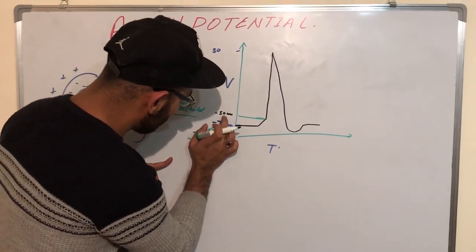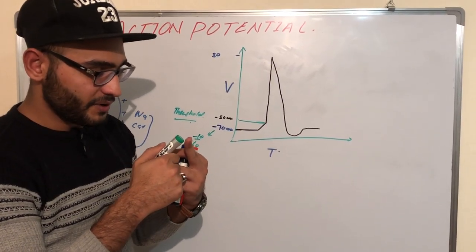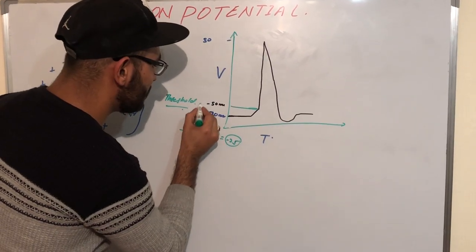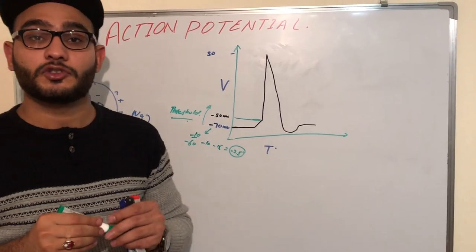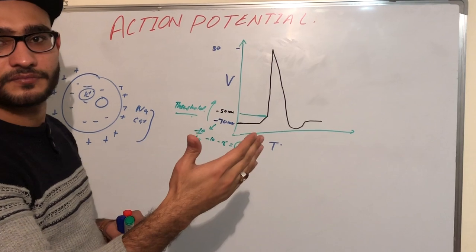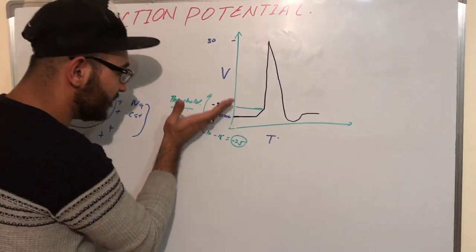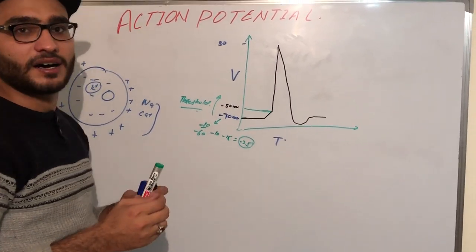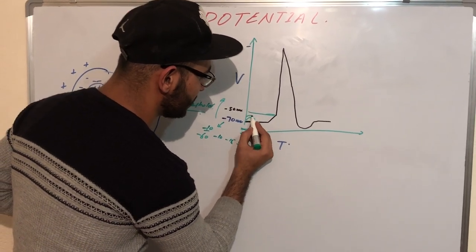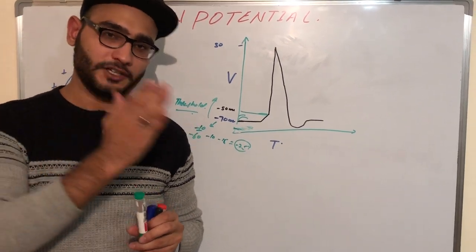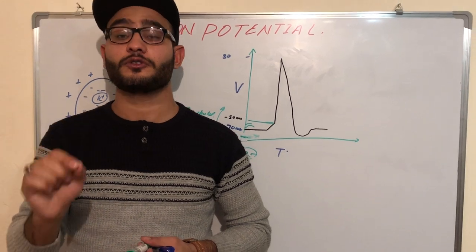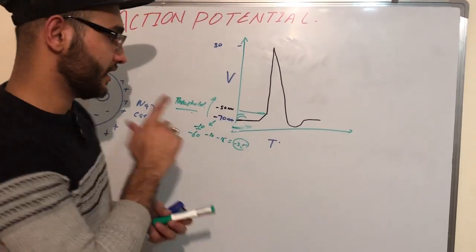It is a necessity for the production of the action potential that the cell membrane should go to the threshold membrane potential. From the threshold membrane potential, if one stimulus has a membrane potential of 10 and another has 50, we can sum them up, and if it is more than minus 50 and crosses the threshold membrane potential, then it is able to produce an action potential. Below the threshold membrane potential, these stimuli are known as sub-threshold stimuli, because they are not able to reach the threshold.